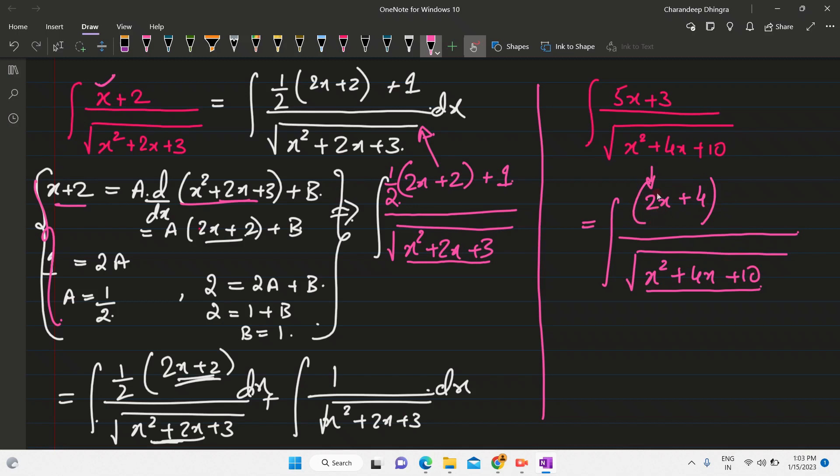now you got 2x, but I need 5x. So what I'll do is, I'll put 5 here, but 2 should not be there, so I'll divide by 2. So now 5 by 2 into 2x will give me 5x, but 5 by 2 into 4. So 5 by 2 into 4 will give me 10, but I need 3. So since this becomes 10, I'll write minus 7.